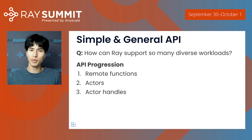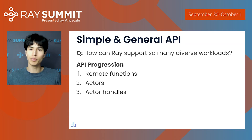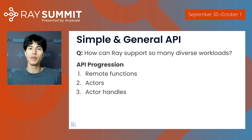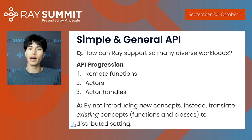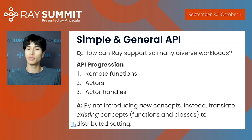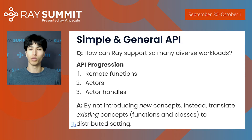Actors were still limited because only one caller could invoke methods on an actor. The third big change was to introduce actor handles, so any actor or task could invoke methods on any other actor. That made the Ray API as general as a lower-level RPC framework and enabled the full diversity of applications we have today. The answer to how Ray supports such general workloads is that our core API doesn't introduce new high-level concepts like a dataset, neural network, or graph — instead, we take the existing concepts of functions and classes and translate those into the distributed setting.